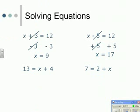These next two are written slightly differently but the same process applies. I've got x plus 4 on one side and 13 on the other. I want x on its own, so the opposite of adding 4 is taking away 4. What I do to one side I have to do to the other, so the plus 4 and minus 4 cancel each other out, and I'm left with x equaling 9.